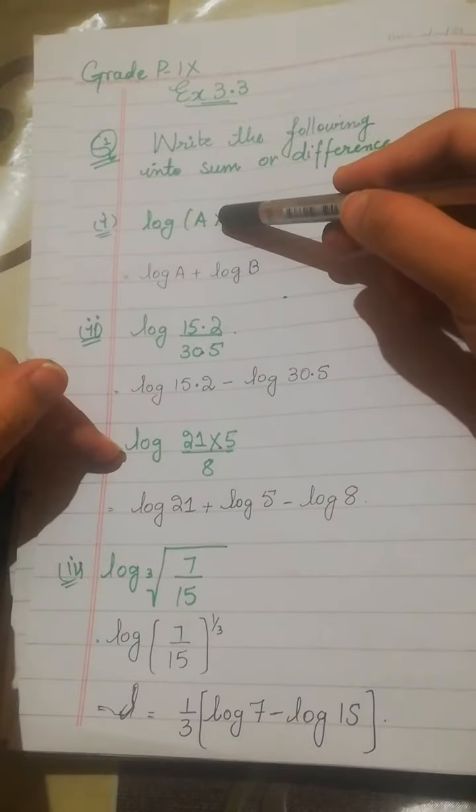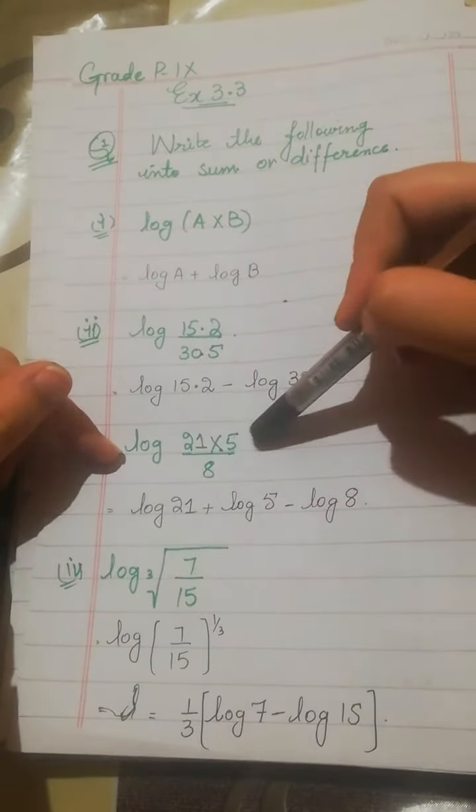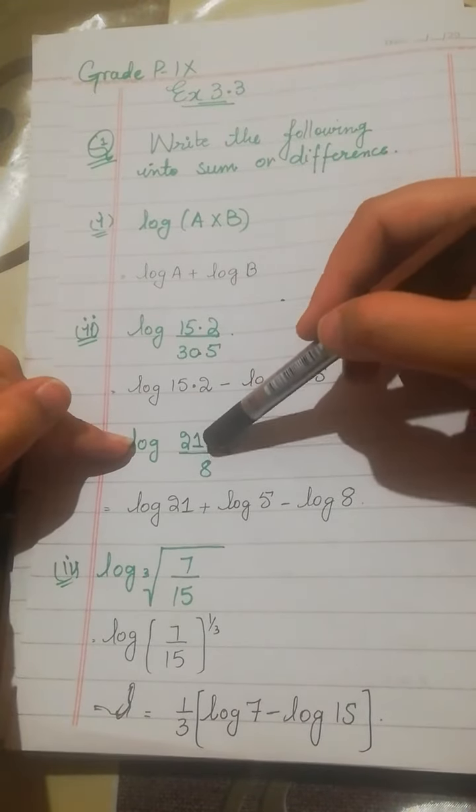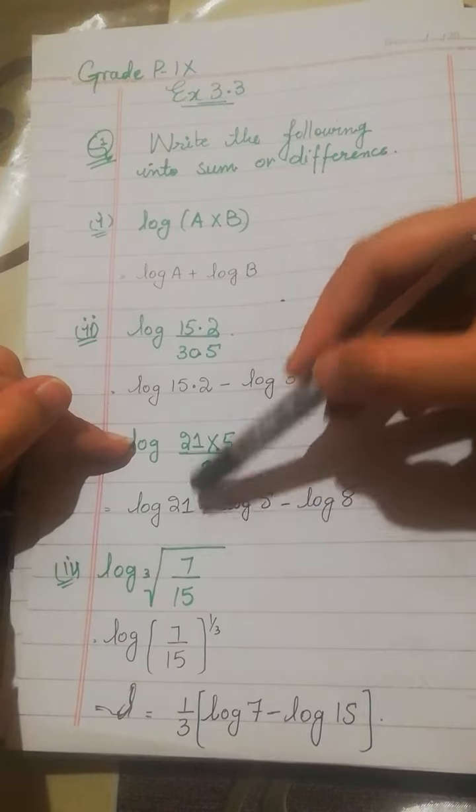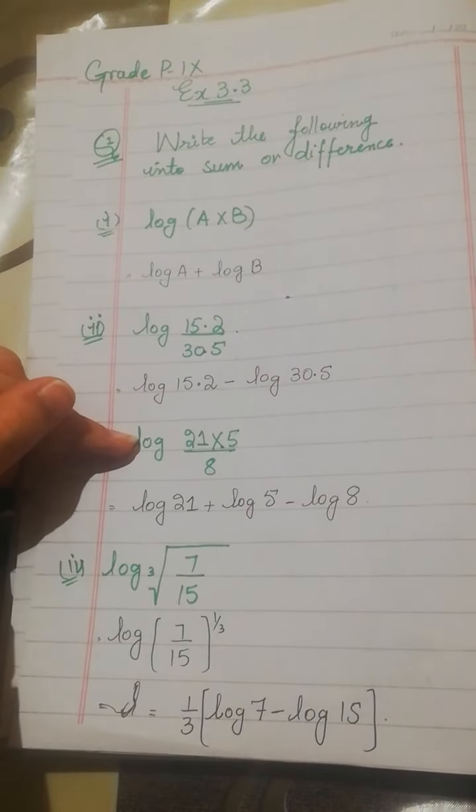Now we have two laws, one multiplication and one division. Now we will apply both. Log 21 into 5 over 8. Now 21 into 5, log 21 plus log 5, and this is divided by 8, which means minus log 8.